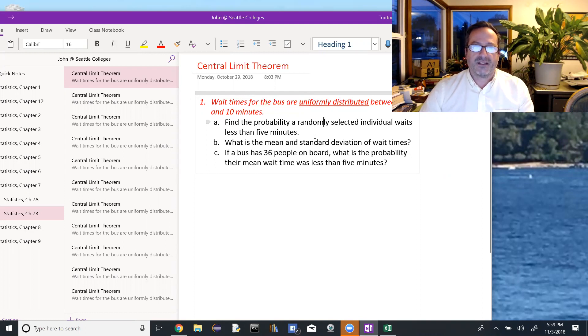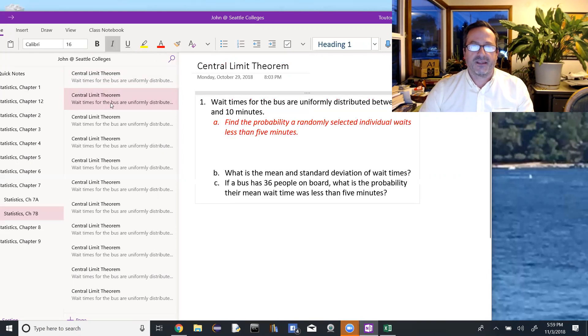So we want to find the probability that a randomly selected individual waits less than 5 minutes. When it says an individual, that's going to be using the original random variable. Find the probability a random individual waits less than 5 minutes.